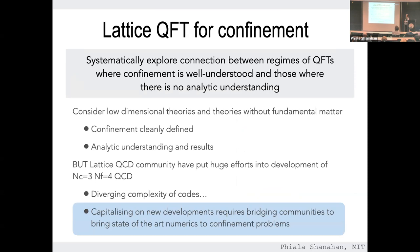For lattice field theory applied to confinement, we want to systematically explore the connection between regimes of field theory where confinement is well understood and those where we lack analytic understanding — that means going to low-dimensional field theories and theories without matter. One problem we face is that all the developments in the lattice QCD community have largely been for QCD in four dimensions. After 30 years of development and optimization, those codes are not easily adapted to other theories. Really capitalizing on these developments needs a bridging of communities and new efforts in numerics.